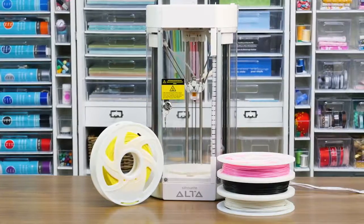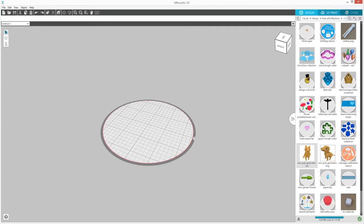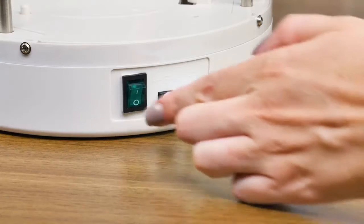To load the filament in your Alta 3D printer, start by opening Silhouette 3D. Power on your Alta.